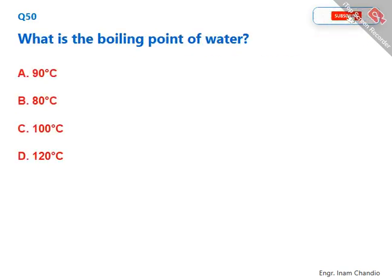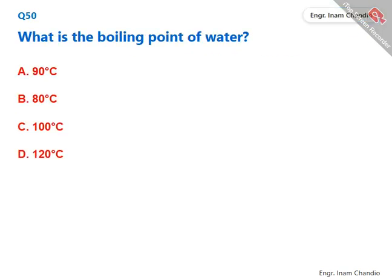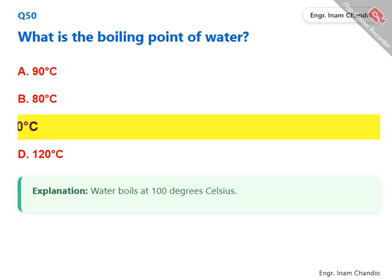What is the boiling point of water? Water boils at 100 degrees Celsius. The correct answer is C. 100 degrees Celsius.